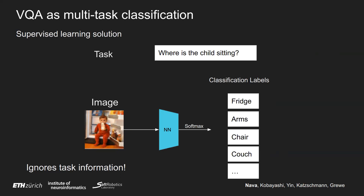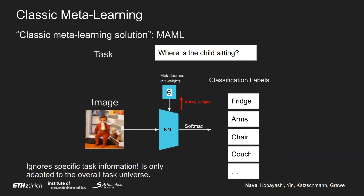However, if we had to do this for every task, we would ignore task information and would potentially underperform compared to a technique that takes into account the overall task universe. If we wanted to do a classic meta-learning solution, that would be MAML, in which we meta-learn initialization weights for our neural network using a MAML update between training for every task. However, this ignores the specific task information — we are only adapting the initialization to the overall task universe.